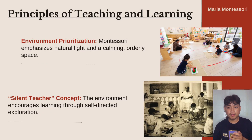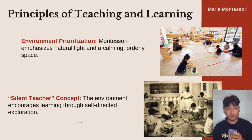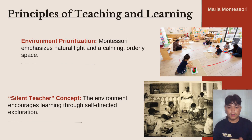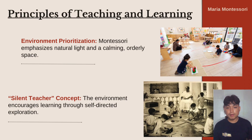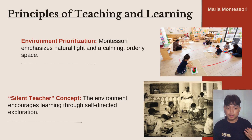The third principle is about environmental prioritization. Montessori emphasizes natural light and a calming, orderly space. For example, big windows let in a lot of natural light and walls might have educational posters. This makes the space look nice and adds to the learning experience. The next principle is the silent teacher concept. The environment also encourages learning through self-directed exploration, where children choose activities based on their own interests, guided by materials for self-correction. This is similar to the silent way method, in which the teacher remains silent and lets students do their activity.